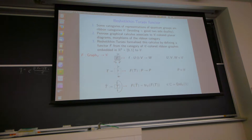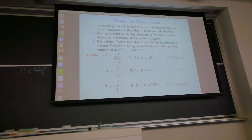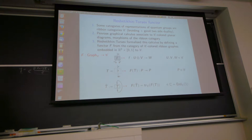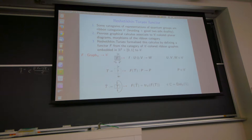It was defined using colored quantum group representations, and I will work with the Reshetikhin-Turaev point of view, which is a functor from a category. Generally speaking, some categories of representations of quantum groups are ribbon categories, meaning there is a braiding — an isomorphism between U⊗V and V⊗U — together with good two-sided duality, pivotal structure, and compatibility between the two.